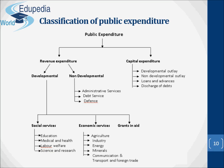The capital account is related to the acquisition and disposal of capital assets. Capital budget is a statement of estimated capital receipts and payments of the government over a fiscal year. It consists of capital receipts and capital expenditure. The capital account deals with expenditure usually met from borrowed funds with the object of increasing concrete assets of a material character or of reducing recurring liabilities, such as construction of buildings, irrigation projects, and so on. Capital receipts include borrowings, recovery of loans and advances, disinvestments, and small savings. Capital expenditure includes developmental outlay, non-developmental outlay, loans and advances, and discharge of debts.